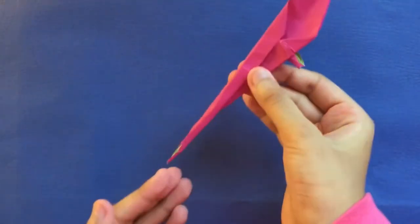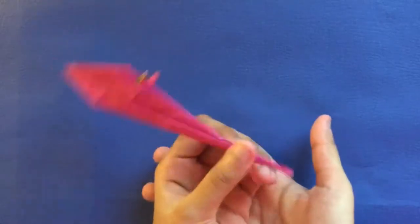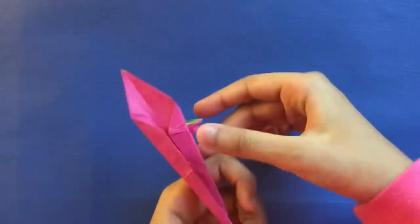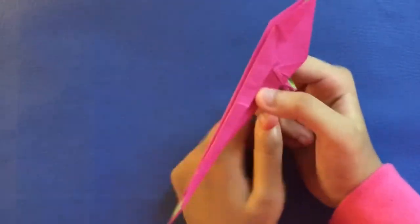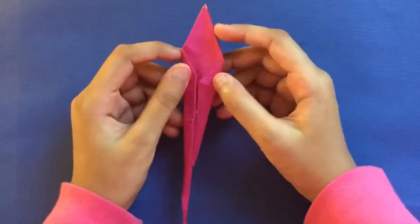So you have this is going to be the tail. You have a long stick which is the tail. Now we're going to form the head and we're going to shape the tail and feet a little bit more.